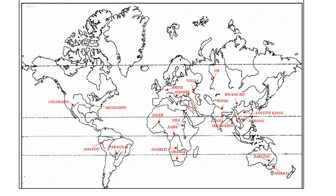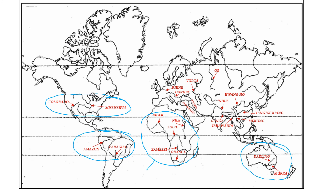Let's quickly recap. In North America we learned two: Colorado and Mississippi. In South America we learned two: Amazon and Paraguay. In Africa we learned five: two with N — Nile and Niger; two with Z — Zaire and Zambezi; and Orange. Then Darling and Murray in Australia.